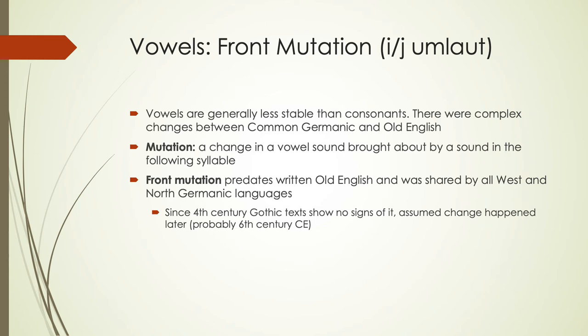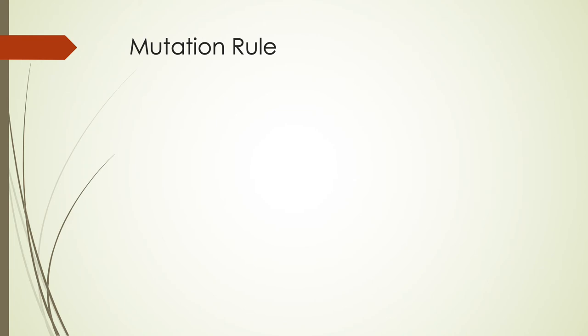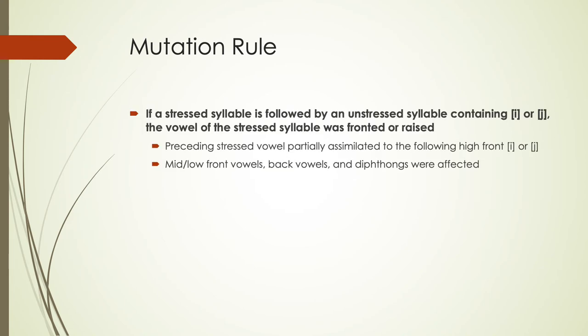The front mutation is also known as I/J umlaut because it was triggered by an E or Y sound in a following syllable. If there was a stressed syllable — typically at the beginning of a word, since the stress shift took place at the end of common Germanic — followed by an unstressed syllable containing E or Y, then the vowel of the stressed syllable was either fronted or raised, moving up or forward because of the high front nature of the E or Y sound.